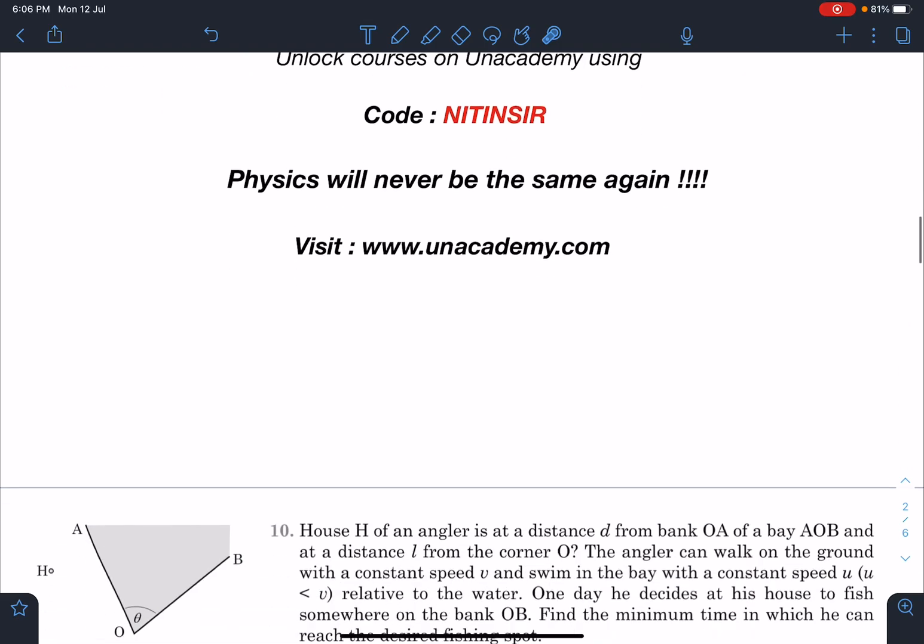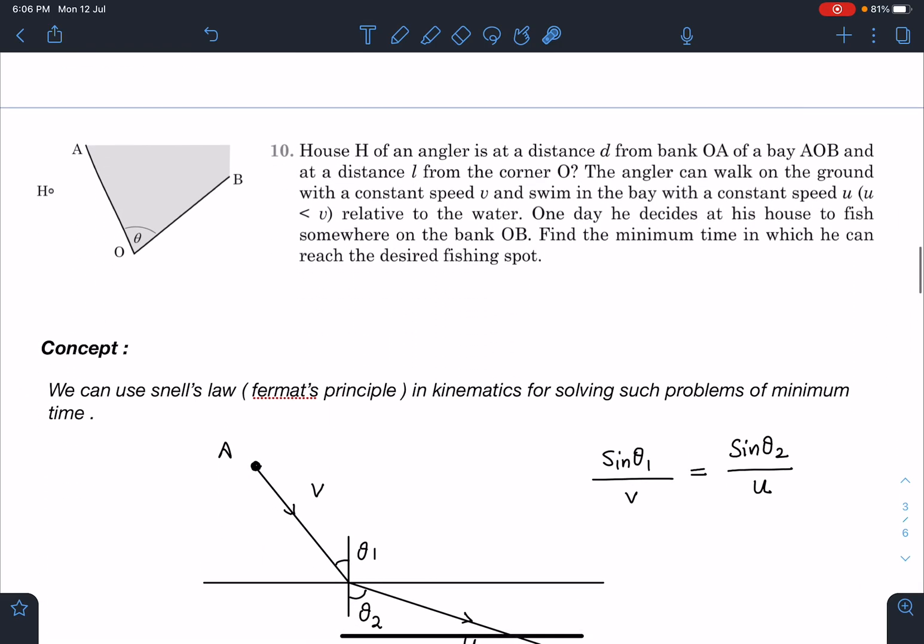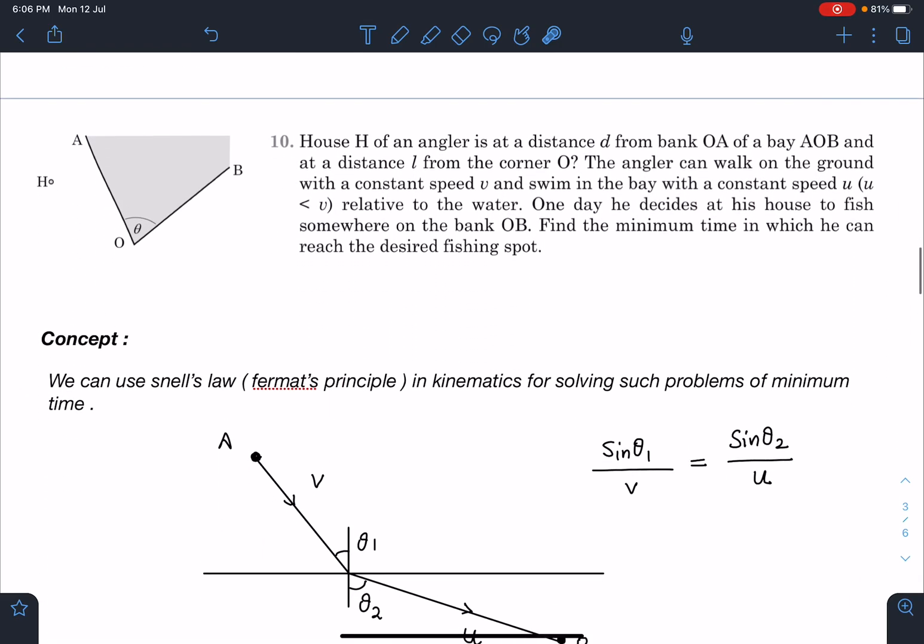So here is the problem statement: House H of an angler is at a distance d from the bank OA of a bay AOB. You can see this is AOB, and it's at a distance l from the corner O. This distance is d and this distance is l. The angler can walk on the ground